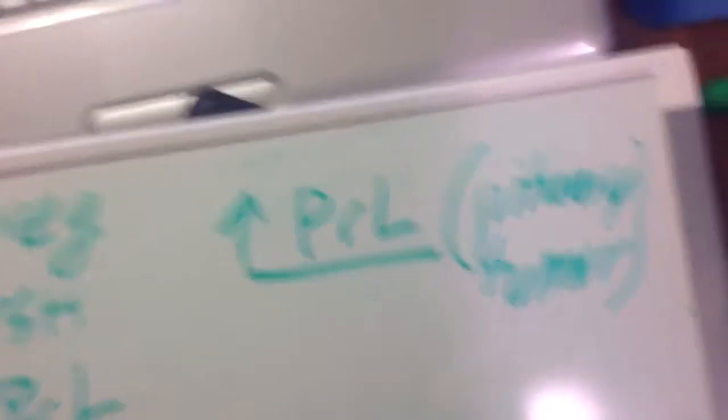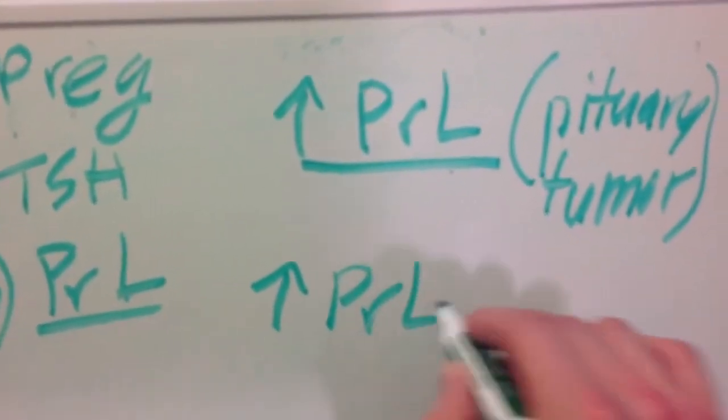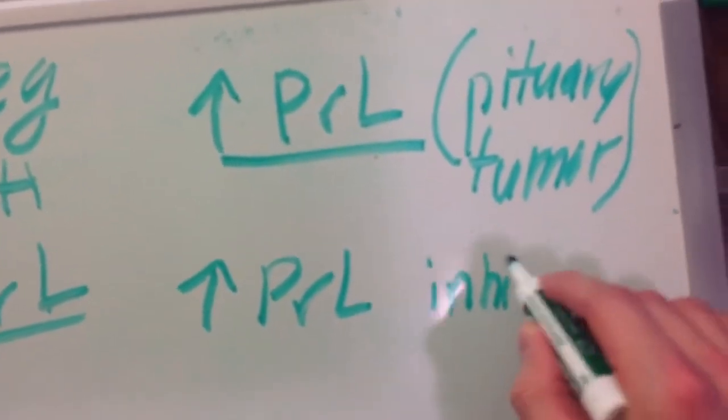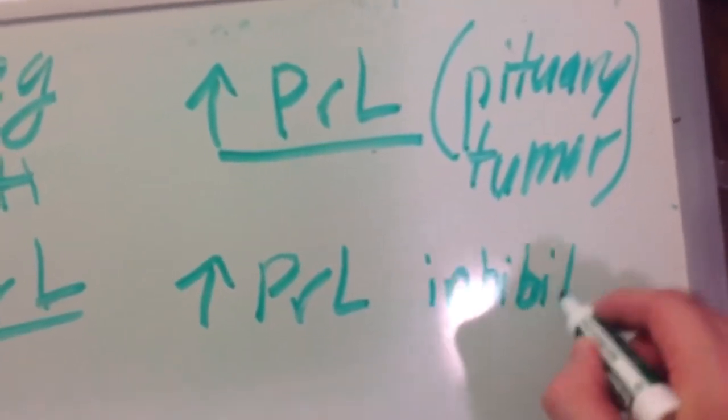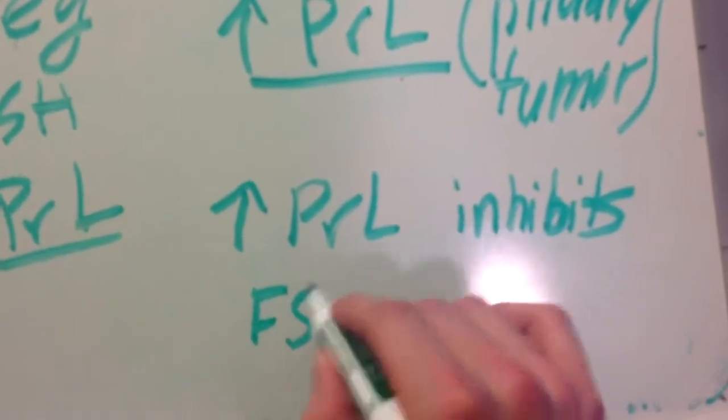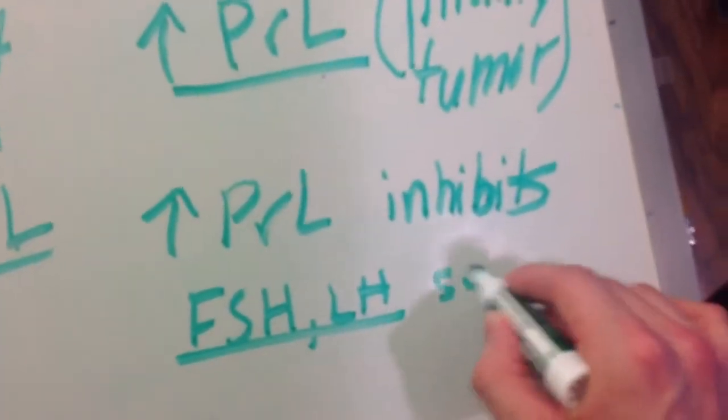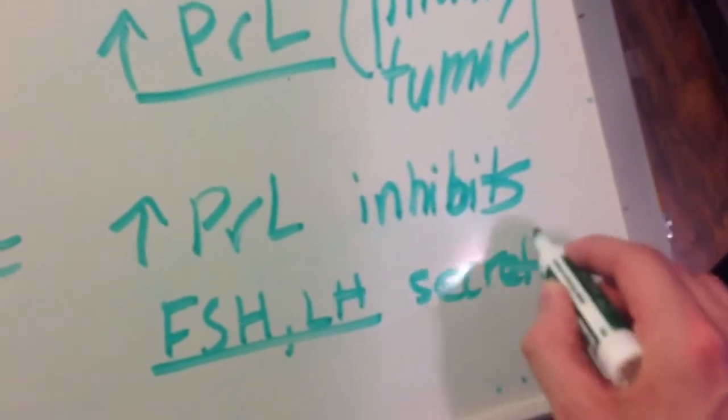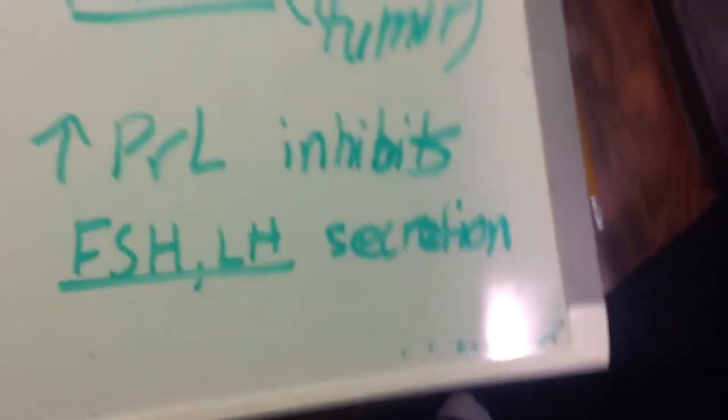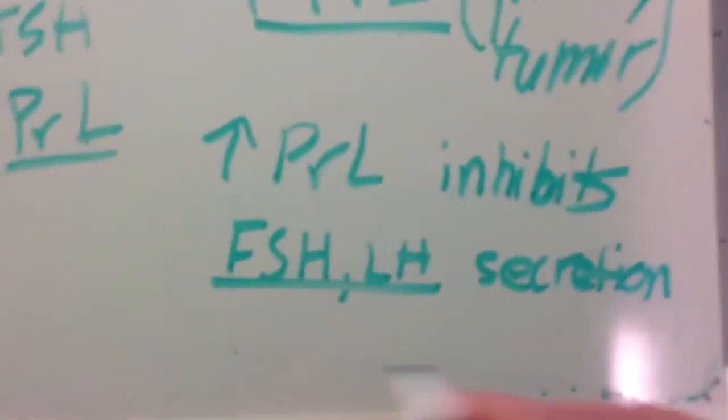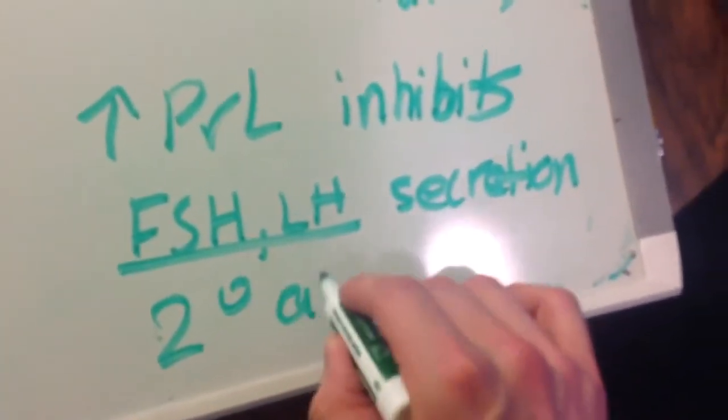If it is due to pituitary tumor, high prolactin inhibits FSH, LH secretion. If this is inhibiting FSH, LH secretion, that means you can get secondary amenorrhea.